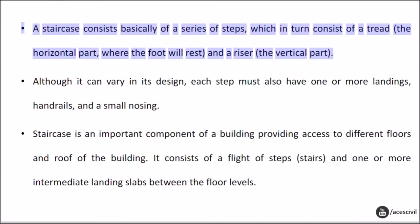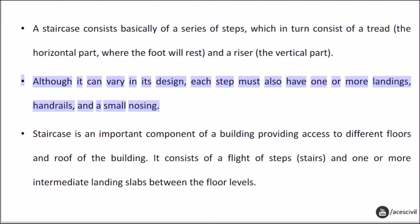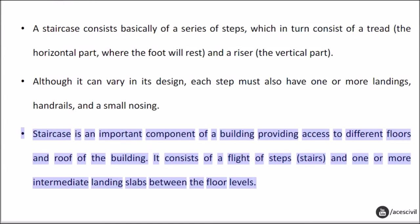A staircase consists basically of a series of steps, which in turn consist of a tread — the horizontal part where the foot will rest — and a riser, the vertical part. Although it can vary in its design, each step must also have one or more landings, handrails, and a small nosing. A staircase is an important component of a building, providing access to different floors and the roof. It consists of a flight of steps and one or more intermediate landing slabs between the floor levels.